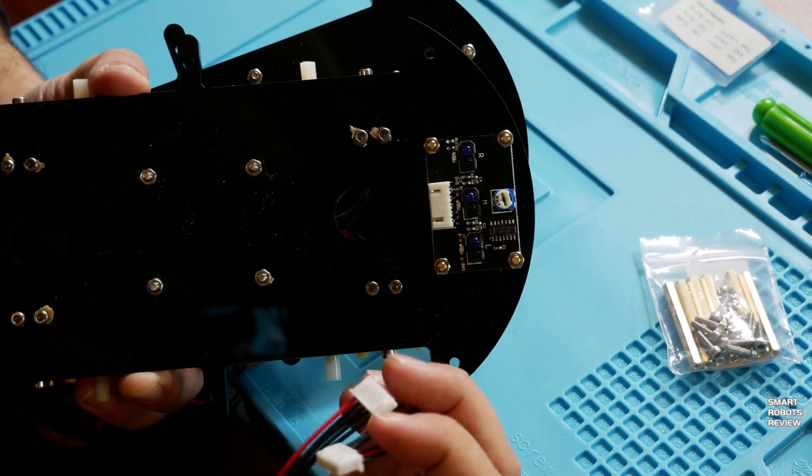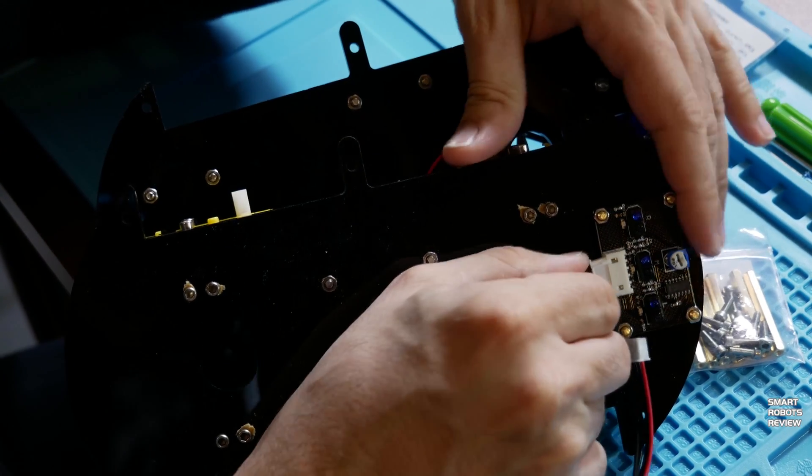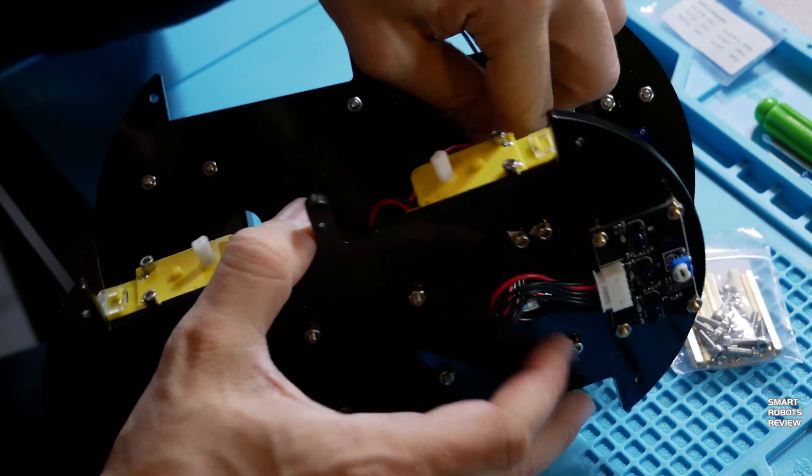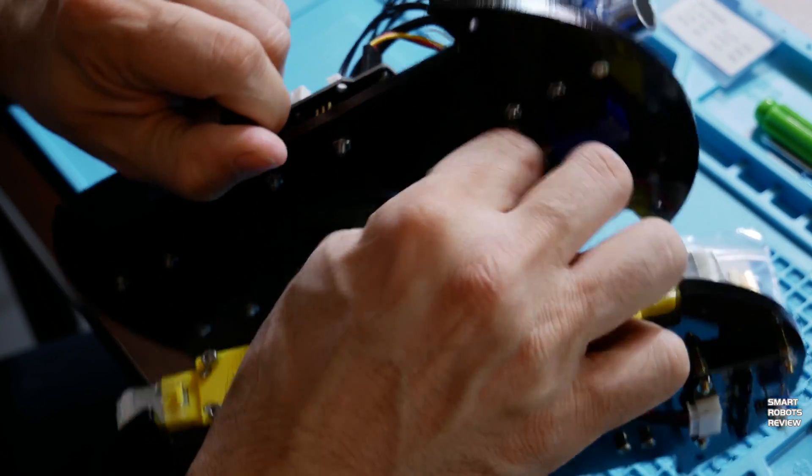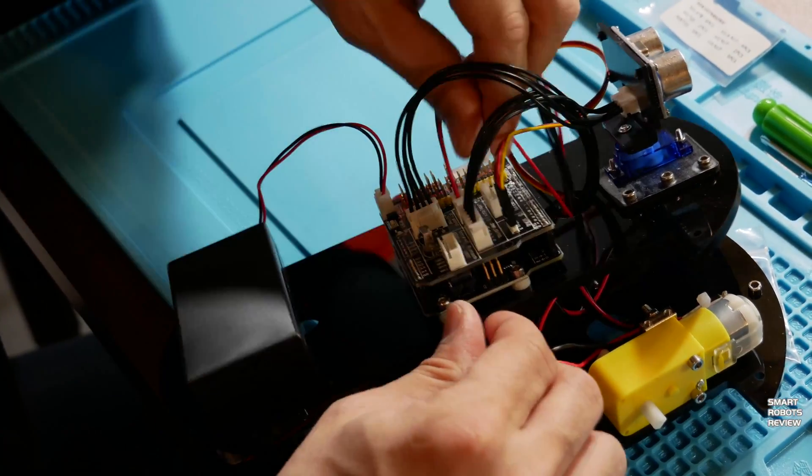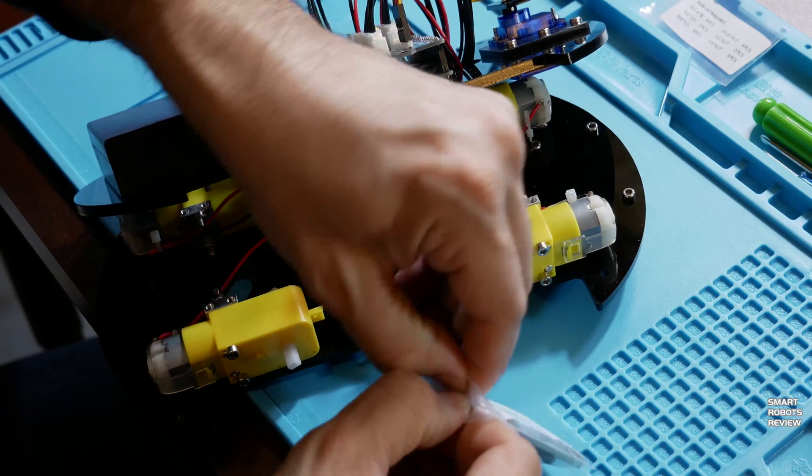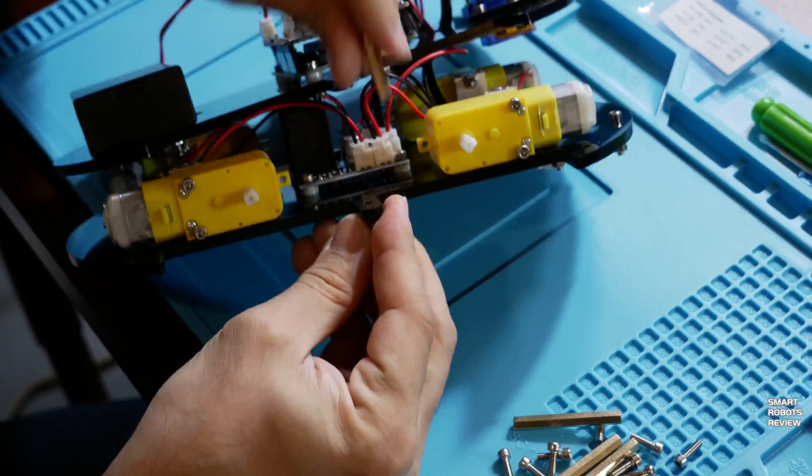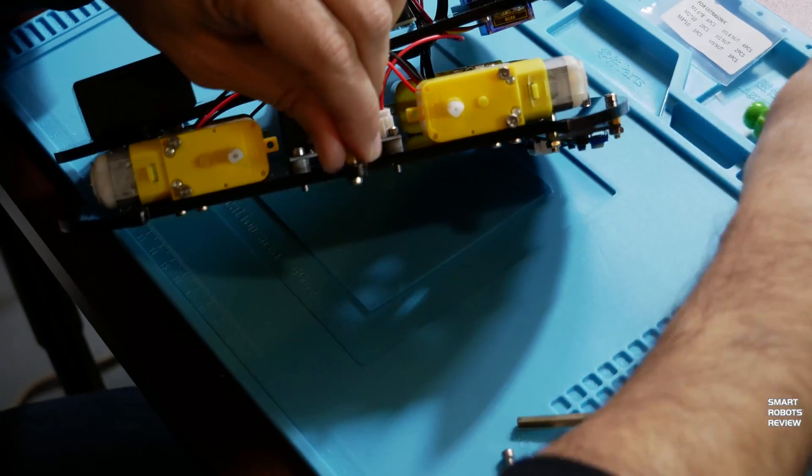And the last cable we're going to be attaching is the line tracking cable directly from the line tracking module to the expansion board. Again, be as gentle as possible with the cables. Avoid tugging on them too much or overly bending them. Now that we're done with the cables, let's connect the two pieces together. And you're going to need the bag with all the spacers and the screws that is left. This is one of the easiest parts of the assembly.